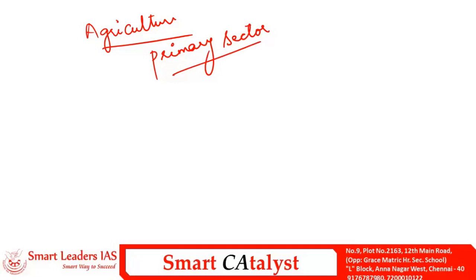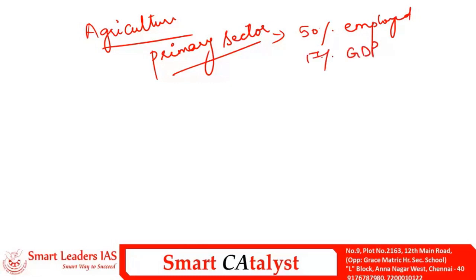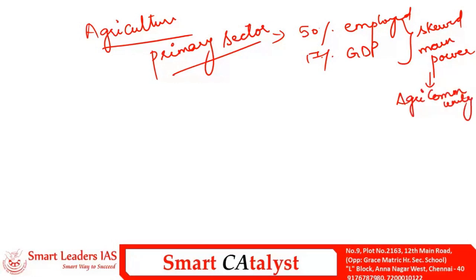Let's consider the case of India. More than 50% of the Indian population is employed in agriculture, but the share of agriculture in Indian GDP is only 17%. This is a skewed distribution of manpower, and this skewed distribution has manifested in many problems for the agri community.